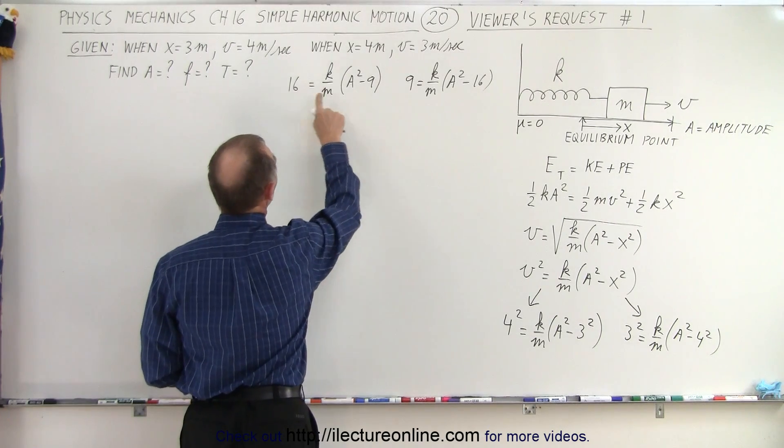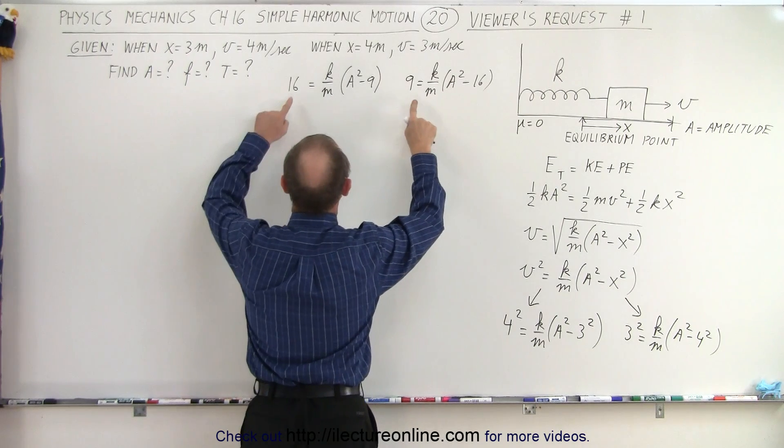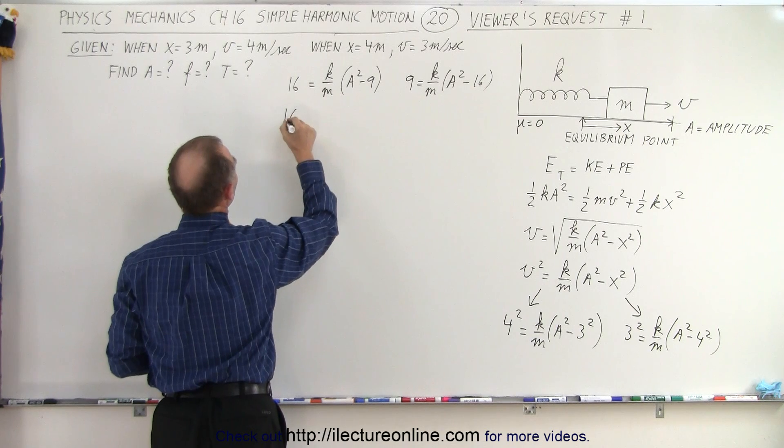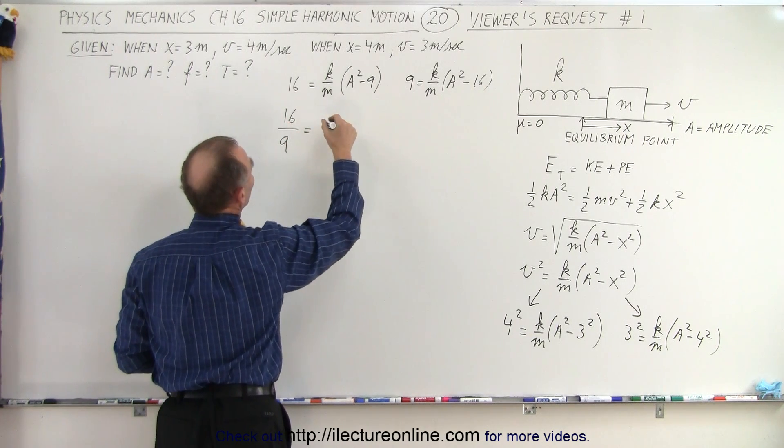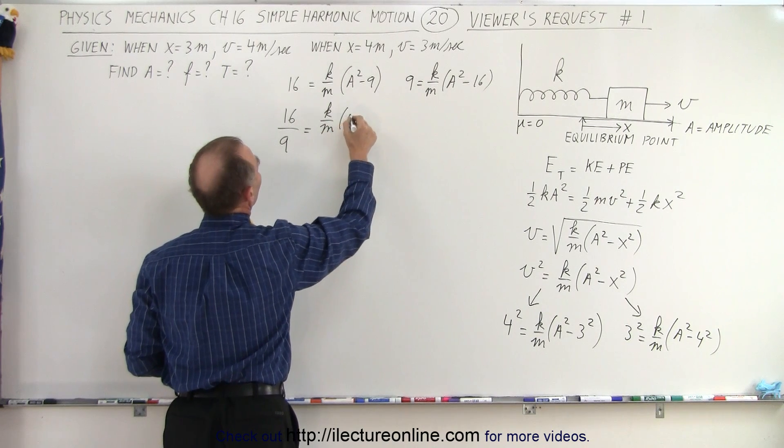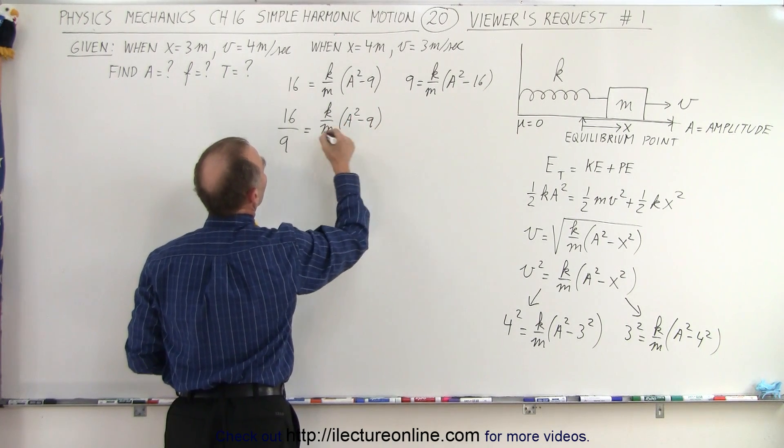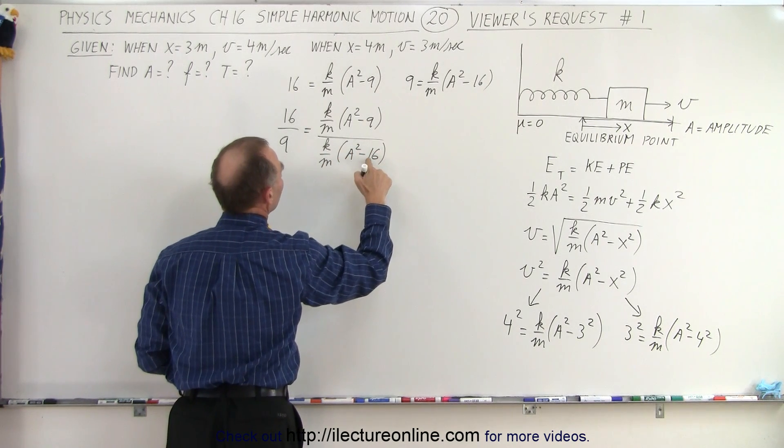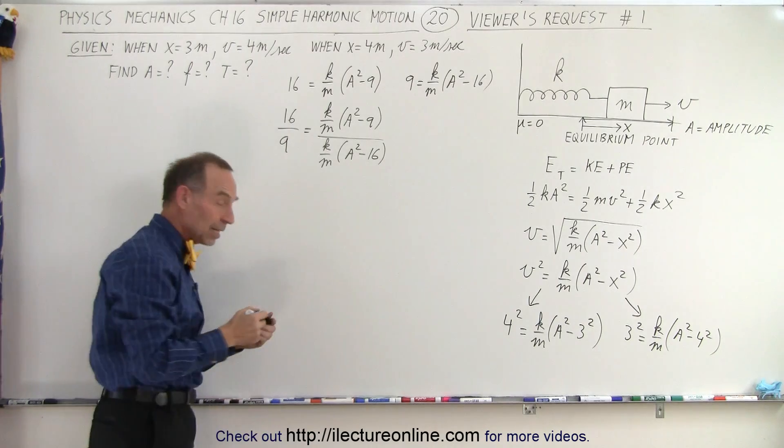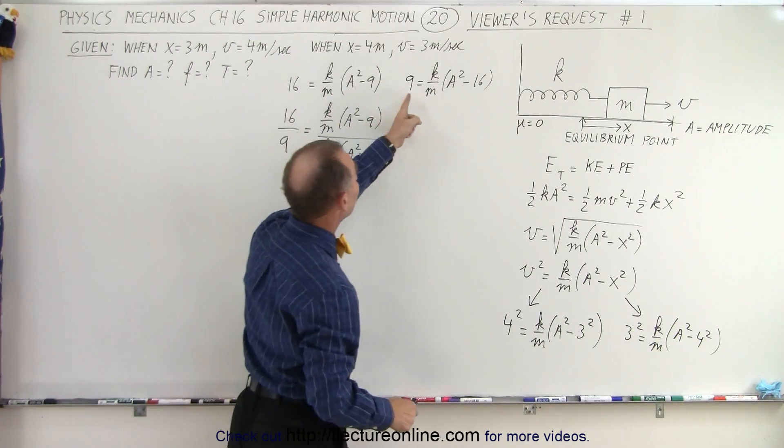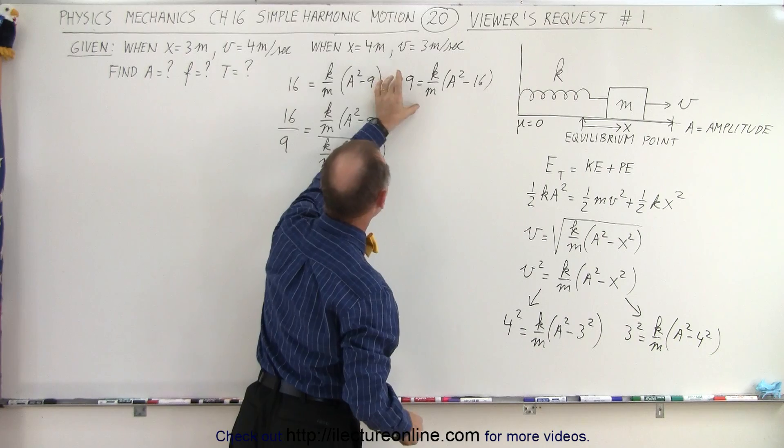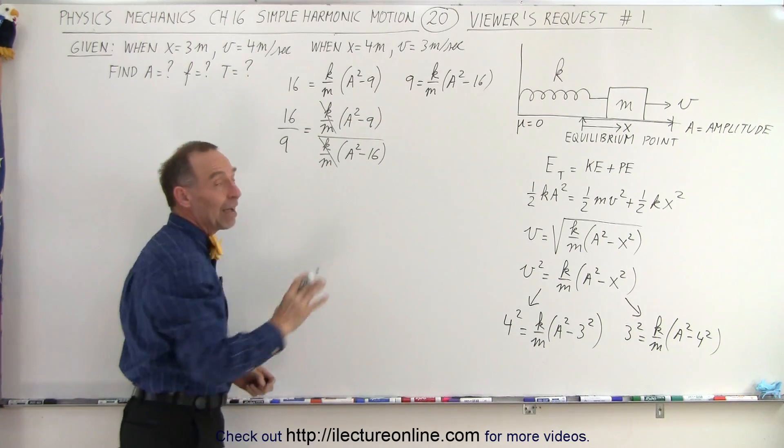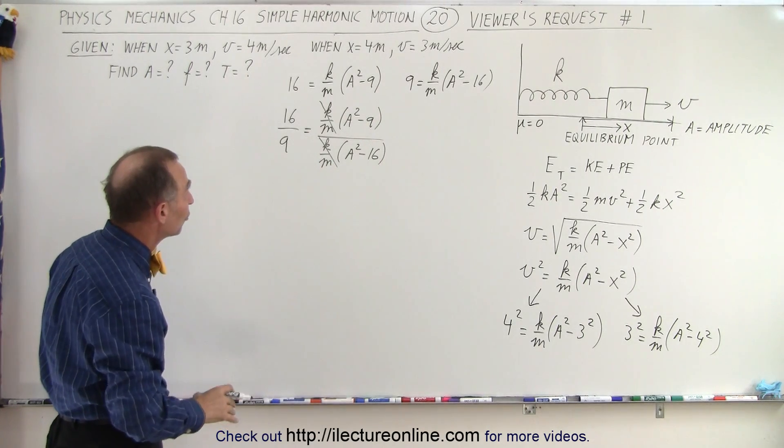Now what we can do is we can divide one equation by the other. So if 16 equals this, and nine equals this, then 16 divided by nine must be equal to this divided by the right side. In other words, 16 divided by nine must therefore equal the ratio of k over m times a squared minus nine divided by k over m times a squared minus 16. So we simply did a proportionality. Notice when we do that, the k over m cancels out, and we only have one unknown in the equation, which is the amplitude a. So we can solve for the amplitude in that equation.